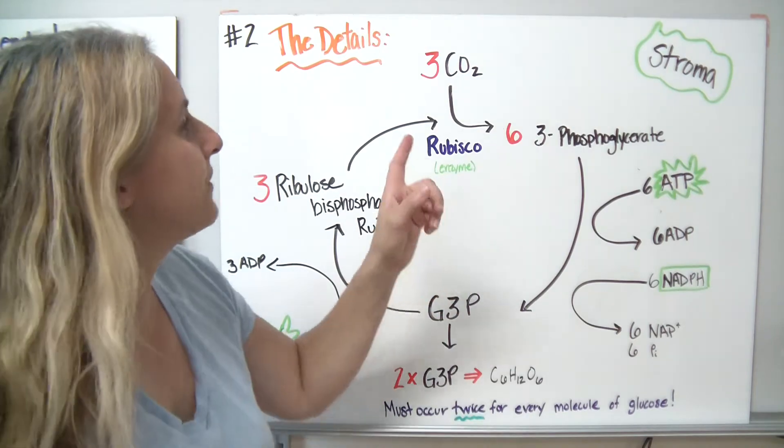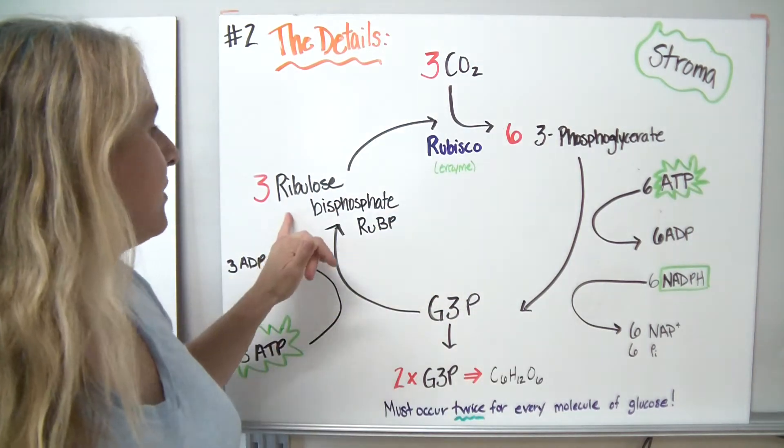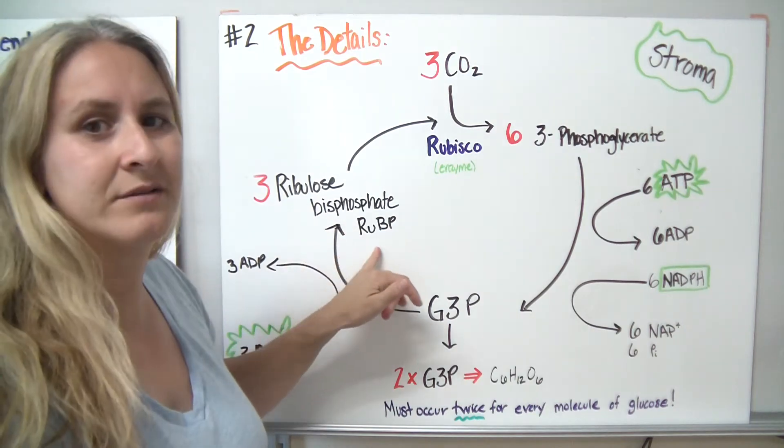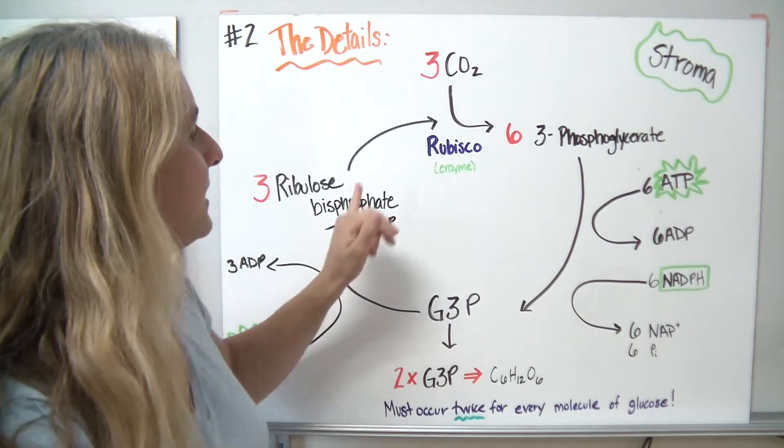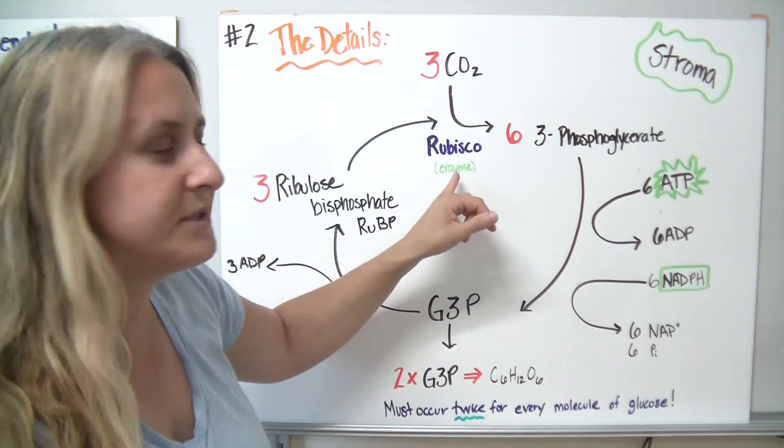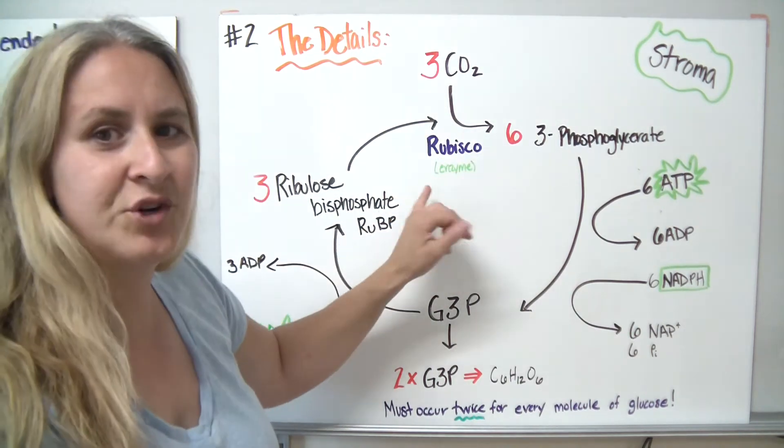This is a cycle. As we come into the reaction, we're going to have something called 3-ribulose biphosphate, RuBP. It's going to combine with carbon dioxide from the environment, three of them, with an enzyme called rubisco.